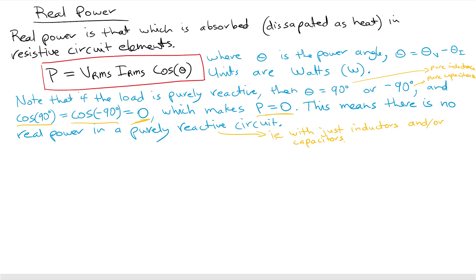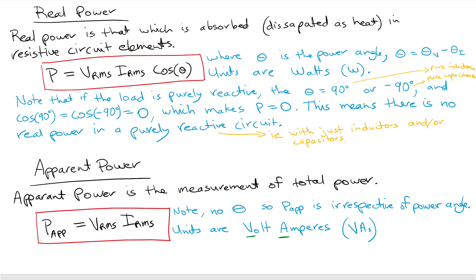The apparent power is defined as the measurement of the total power in the circuit. It is simply the RMS voltage times the RMS current — there's no power angle in this equation, so it doesn't matter what the power angle is when calculating apparent power. The units for apparent power are VAs, which stands for volt amperes.